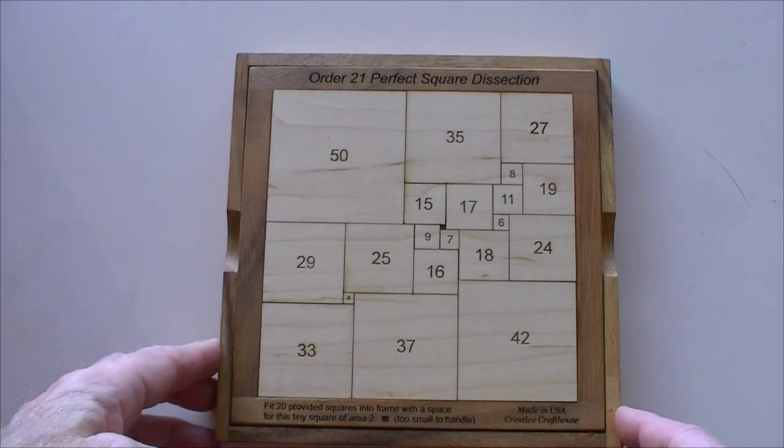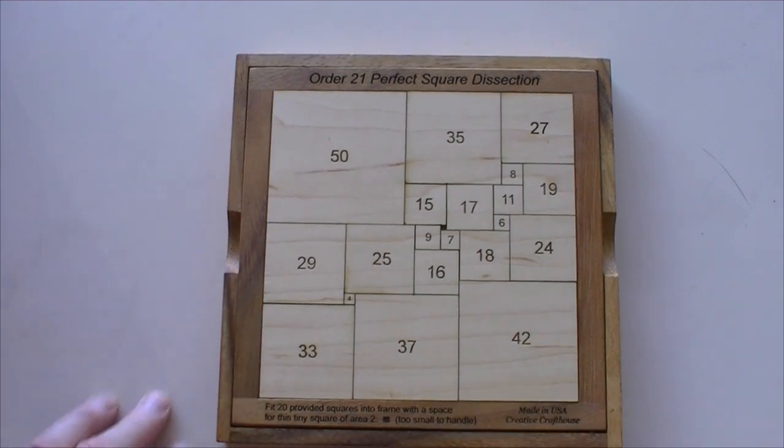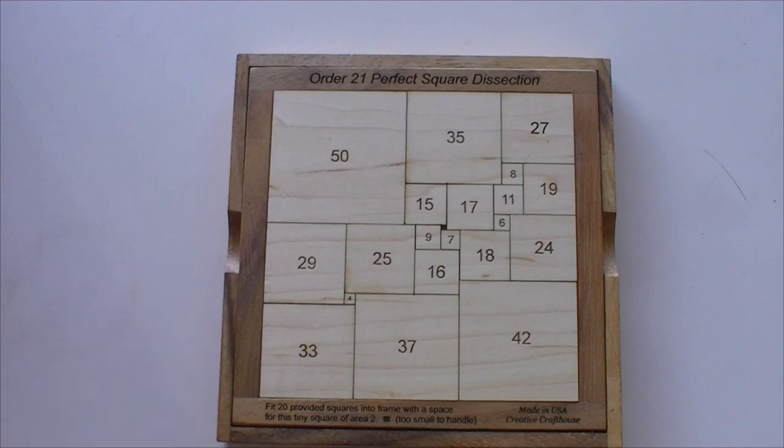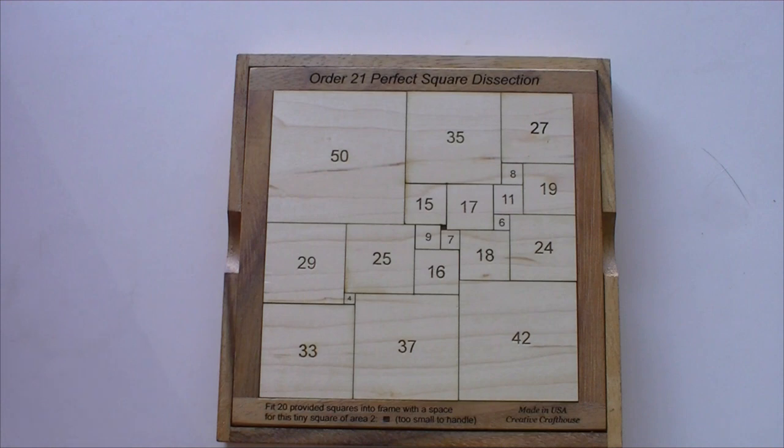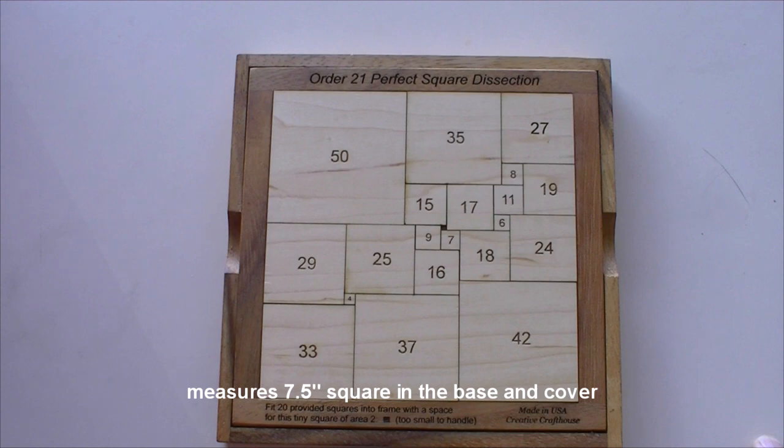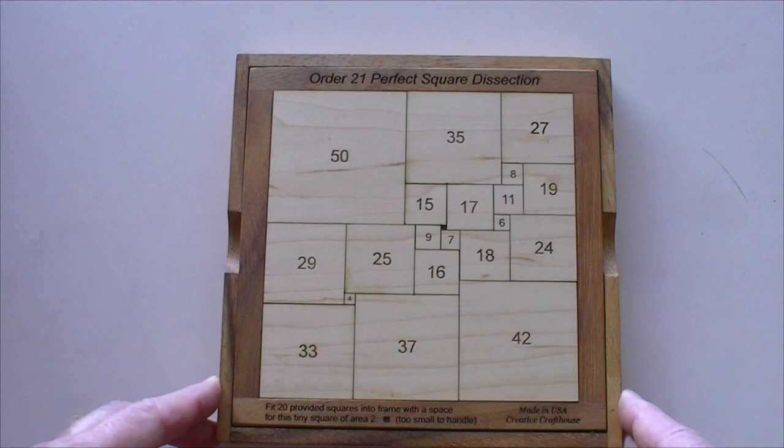Sometime after 1939, it was proven mathematically that the lowest order possible was 21—that is, 21 squares within the square, which is what this puzzle is. But it took some time for mathematicians to find it. In fact, it wasn't until 1978, with the aid of a DEC-10 computer, that the solution was found for order 21.